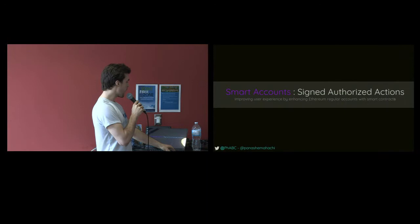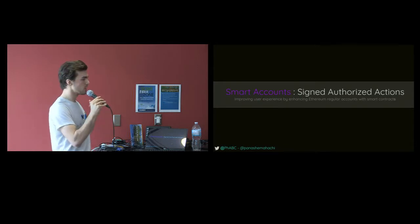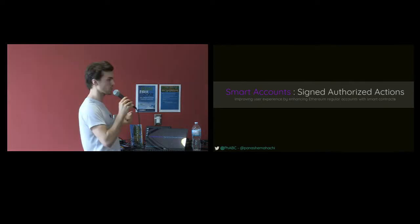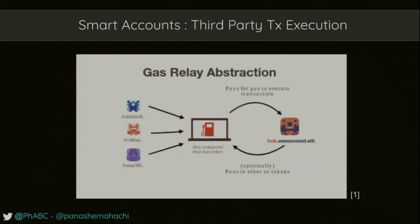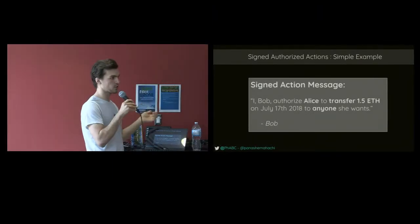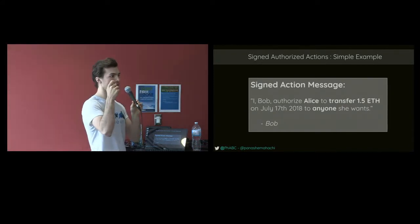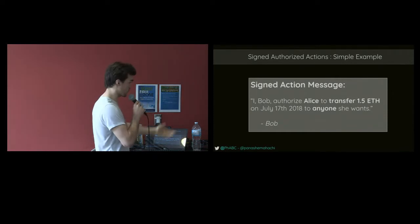Alex talked a bit about how you sign messages. With the people I've been talking to the last few days, it's not always obvious what we actually mean when everything becomes signatures instead of transactions. So I wanted to spend a bit more time on this, and also on gas relay abstraction. When you sign an action message, you're basically saying — I Bob authorize Alice to transfer 1.5 ETH on July whatever to anyone she wants, signed Bob. This signature doesn't require any transaction, just a signed message that Bob signs, sent to Alice. Then Alice can take that signed message, send it to the contract, and the contract will allow Alice to transfer 1.5 ETH wherever she wants if these conditions are met.